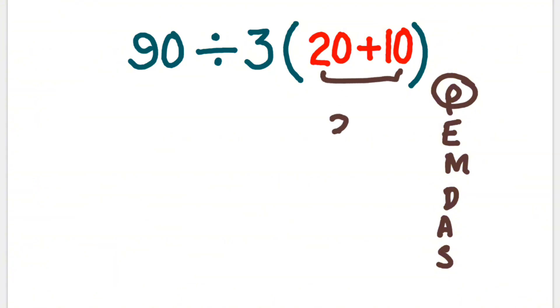So 20 plus 10 equals 30. And where there is no symbol, multiplication is there. We have 3, and the first portion is 90.